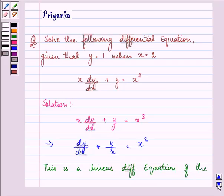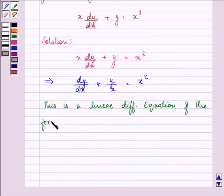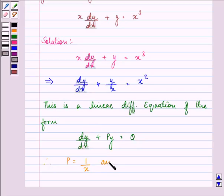of the form dy by dx plus py is equal to q. On comparing these two differential equations we have the value of p as 1 by x and the value of q as x square.